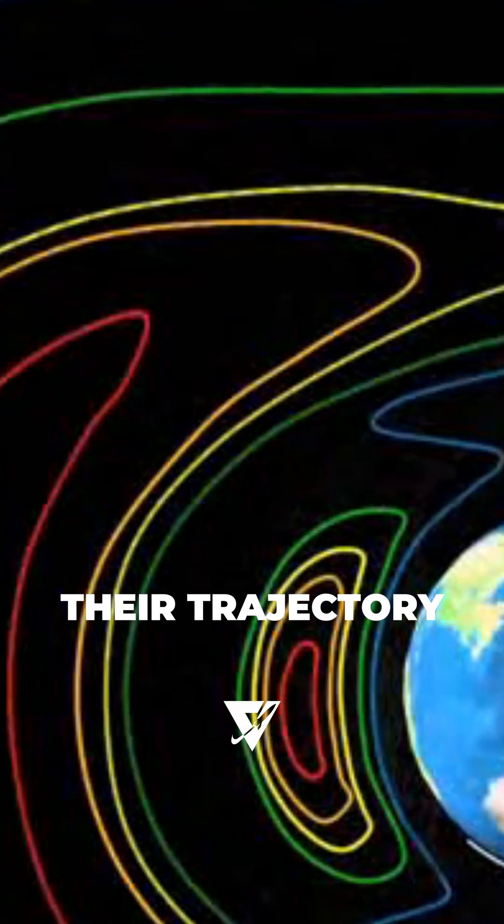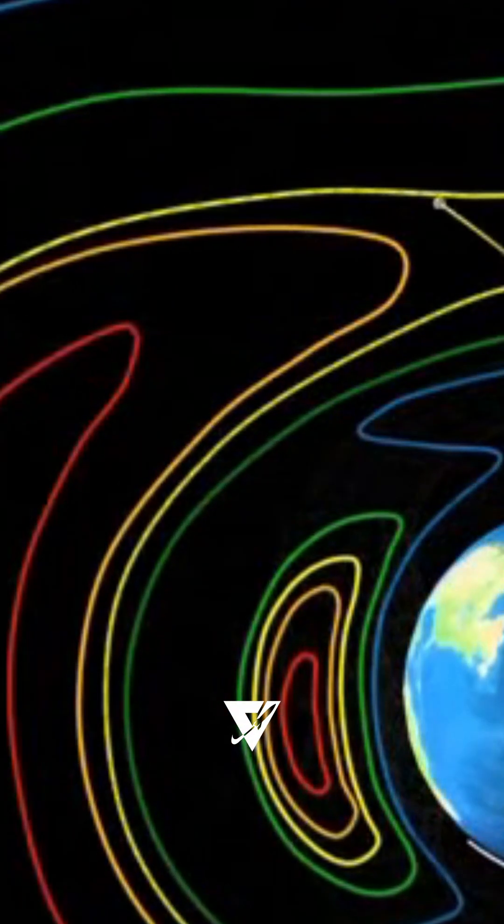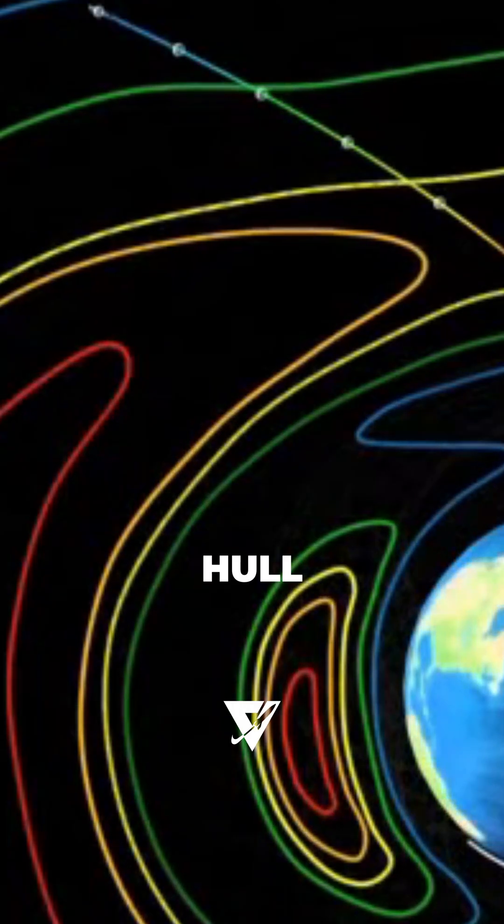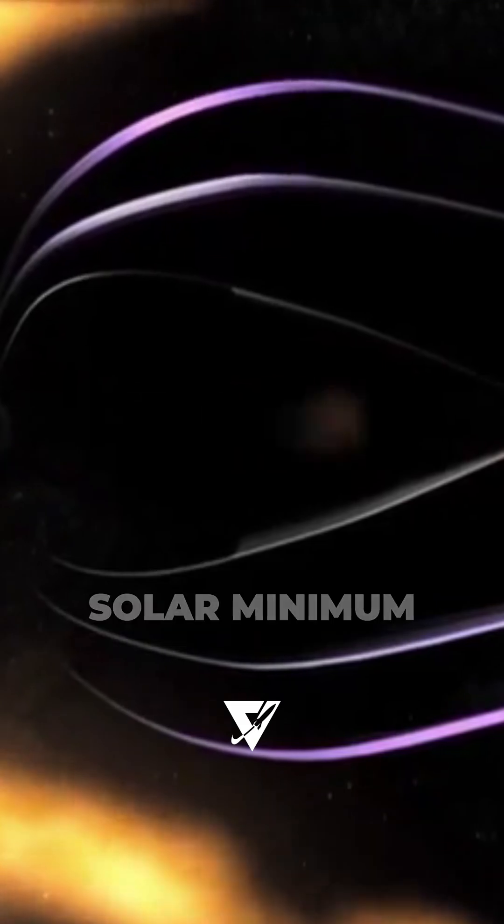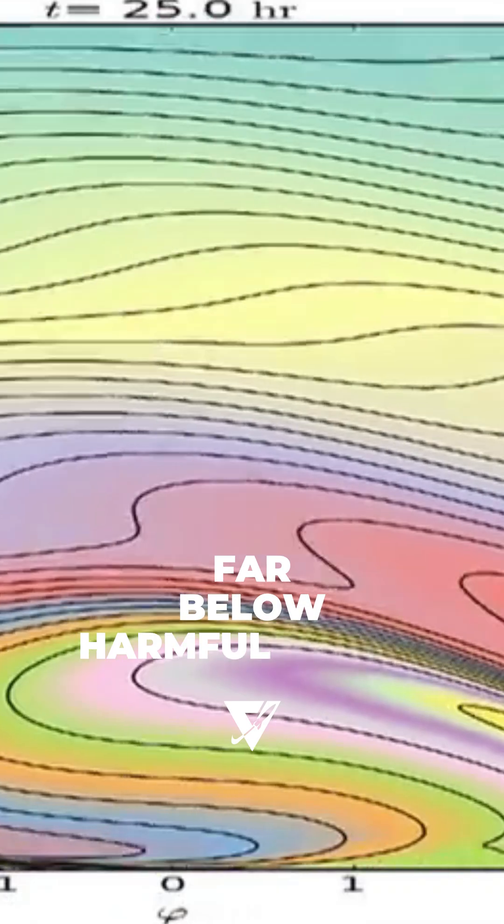NASA plotted their trajectory through the thinnest parts. The spacecraft aluminum hull provided shielding, and the belts themselves were weaker during solar minimum. The result? Exposure far below harmful levels.